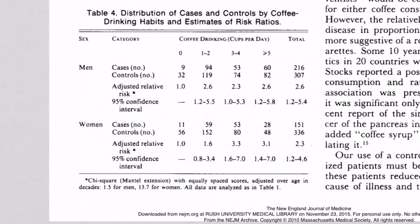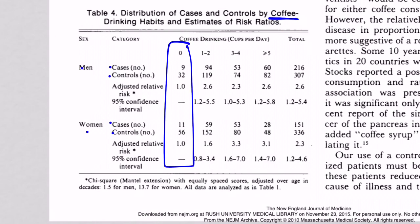Now we look at coffee drinking. Same structure: cases and controls, men and women, with the zero-cups group as referent. Across the top we have one to two, two to three, three to four, and greater than five cups per day. The numbers here are bigger than we've seen before. For men, one confidence interval does not include one — that's potentially significant. Another hits one, so I won't count that. But one more also doesn't include one, and looking at the combined total, that confidence interval also does not include one.